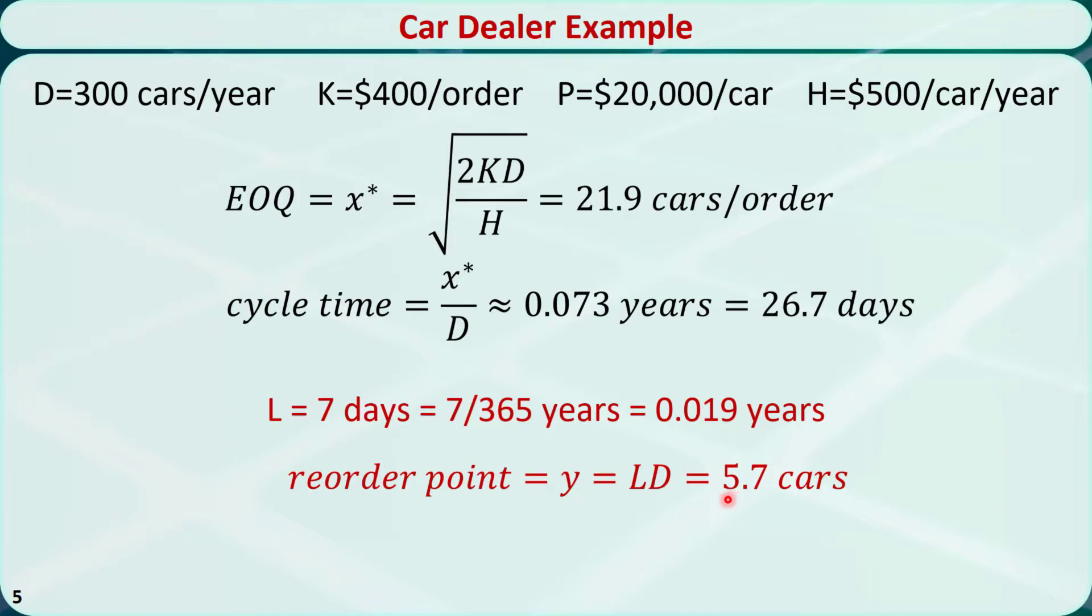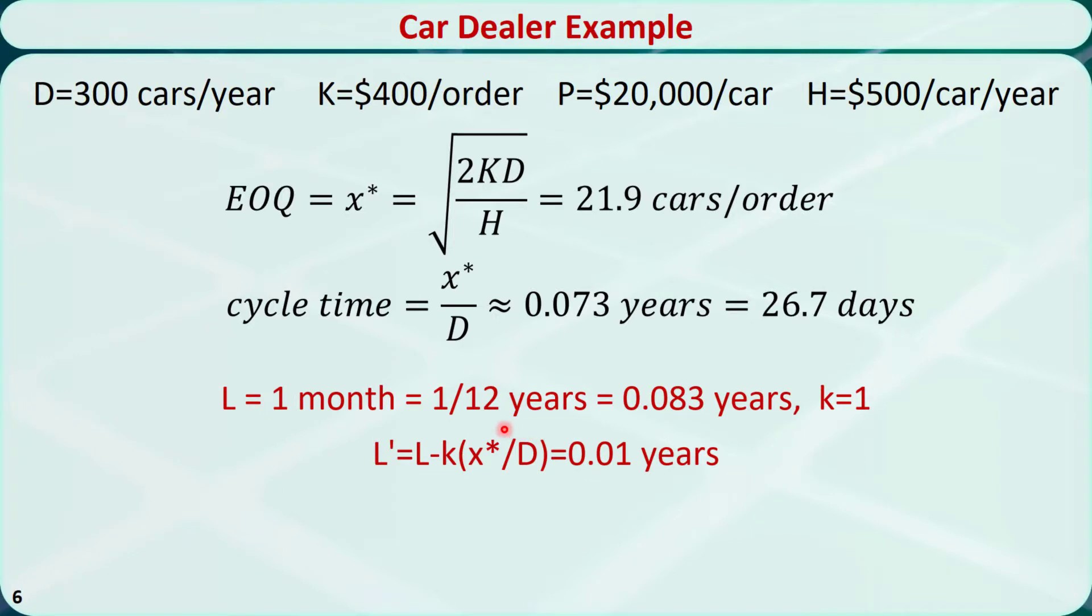If the lead time L is 1 month, then k is equal to 1. It means the lead time is longer than 1 cycle, but less than 2 cycles. After calculation, L prime is equal to 0.01 years. The reorder point is L prime times D is equal to 3. It means when there are 3 cars left in the inventory, we need to place the next order for 21.9 cars.